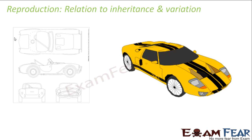A blueprint is a sketch which gives all the details about that particular object and its entire construction. Here you can see the blueprint of a car — it tells where the seat is going to be, how the appearance of the car should be from side view, front view, and back view. Based on this blueprint the car is actually constructed, and that is how the end result comes.